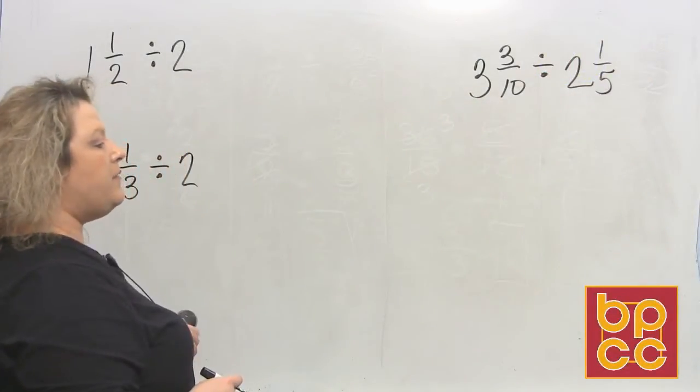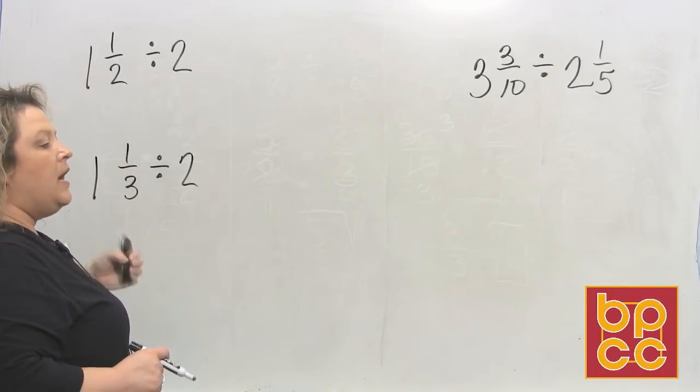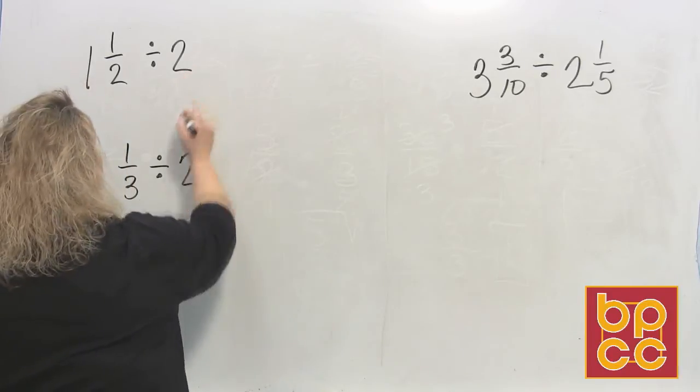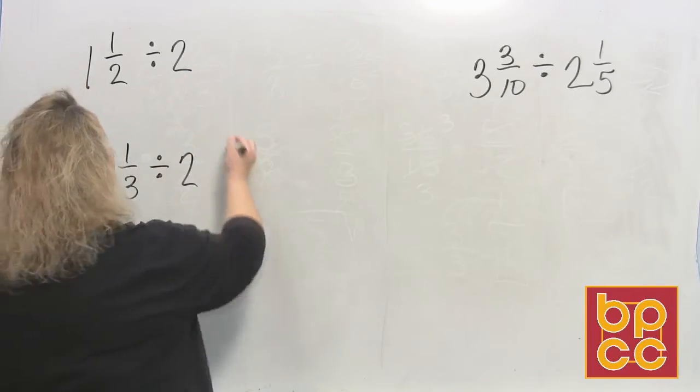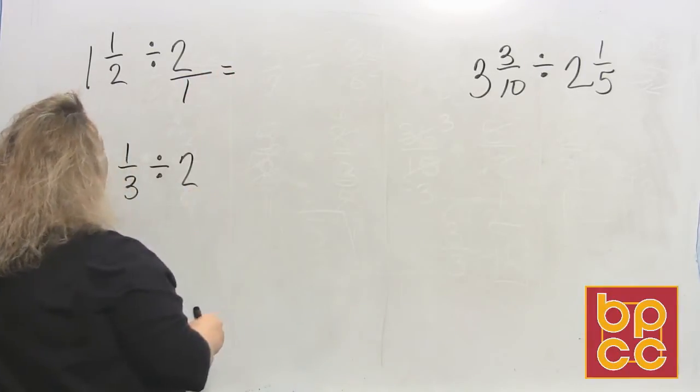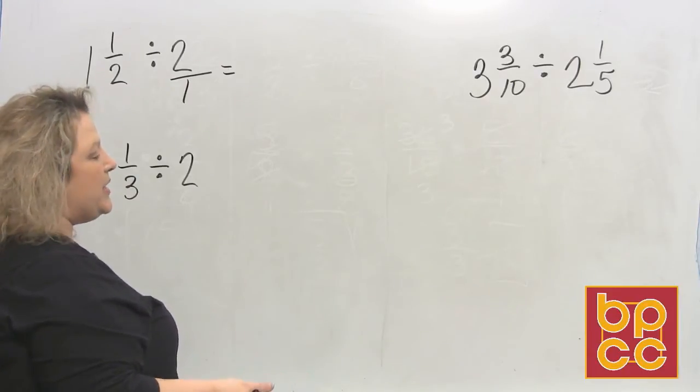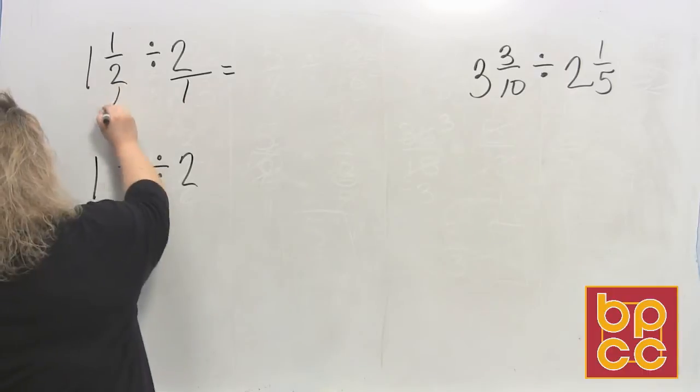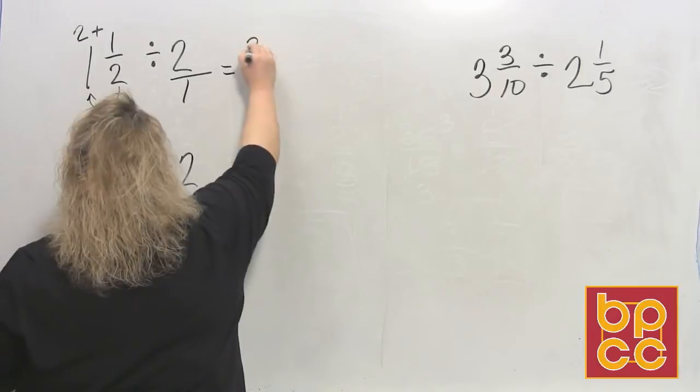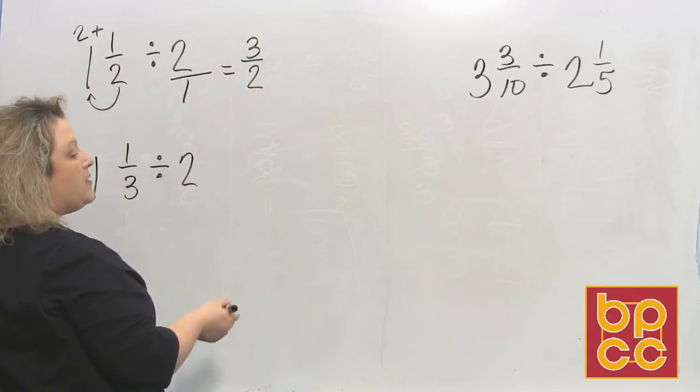So this first one says if I have one and a half cups of chocolate chips and I want to divide it into two equal parts, what is this understood? Now we just got through talking about this. All whole numbers have an understood one of them. So anytime you're dealing with mixed numbers, turn them to improper fractions. It just makes it easier to do. So we do two times one is two plus one makes three. So that would be three over two.